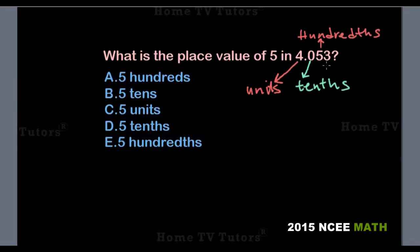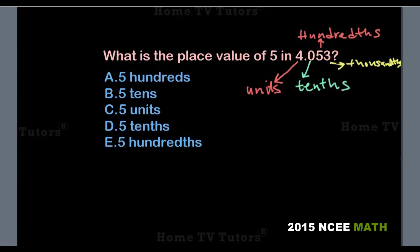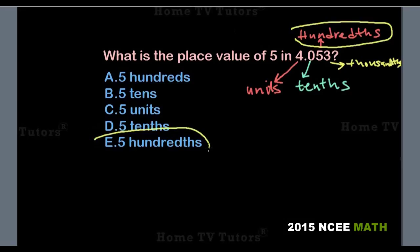Then the last digit 3 is in the thousandths. So the place value of 5 in this decimal number is hundredths. Therefore, the answer option E is the right answer.